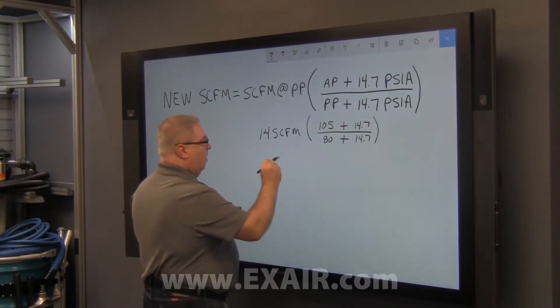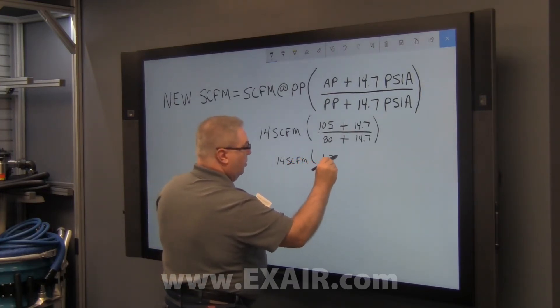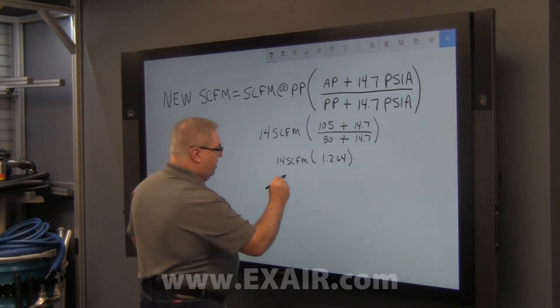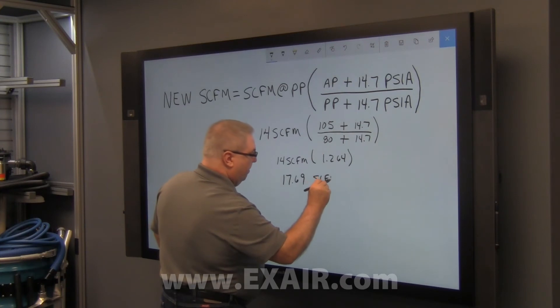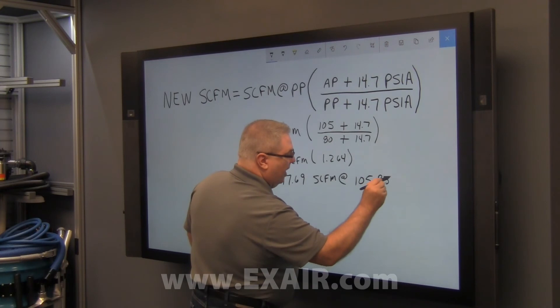Simplifying, we have 14 SCFM multiplied by 1.264, which yields us 17.69 SCFM at 105 PSIG.